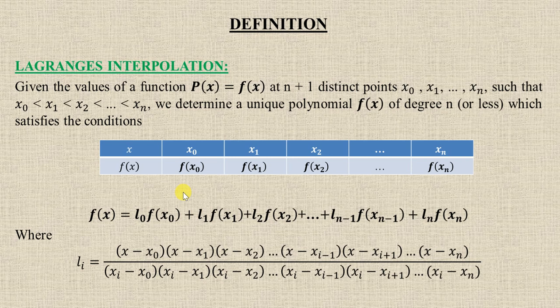First you see the formula directly. f(x) = l₀f(x₀) + l₁f(x₁) + l₂f(x₂) + dot dot dot and so on, where lᵢ is: x minus x₀, x minus x₁ dot dot dot to x minus xᵢ₋₁ and x minus xᵢ₊₁. The x minus xᵢ term is missing in the numerator. In the denominator, x is replaced by xᵢ.